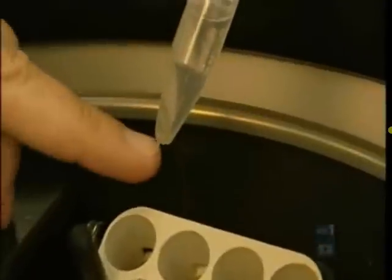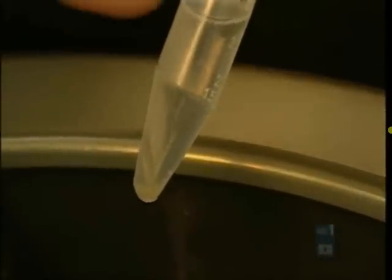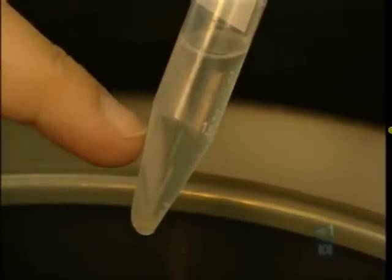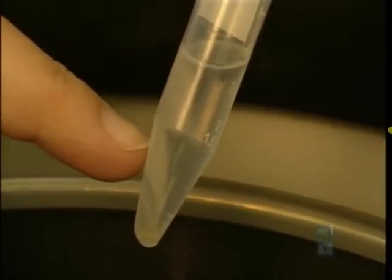We have a pellet in the bottom, which is unwanted. It is the clear solution above the pellet that contains the unprotected DNA.